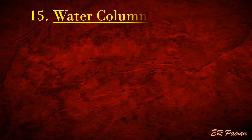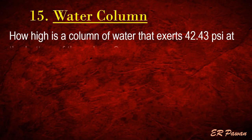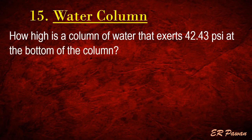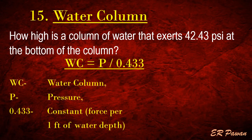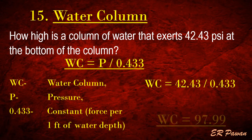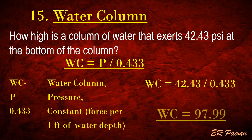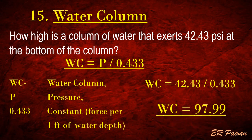Formula 15 — Water Column. How high is a column of water that exerts 42.43 pounds per square inch at the bottom of the column? Water column height equals pressure divided by 0.433, where 0.433 is a constant representing force per one foot of water depth. Let's put the value in the formula.